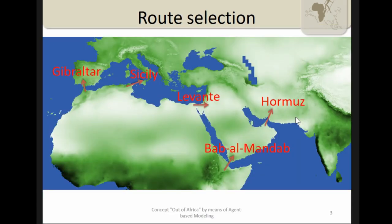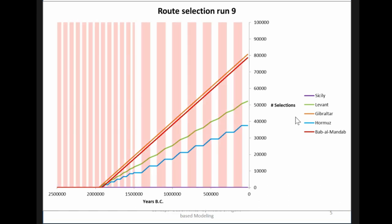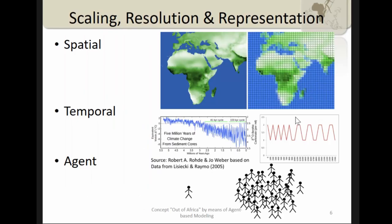As one example — to give you a sense of my background — we can look at route selection and how we compare hypotheses. We set agents that behave according to certain formalized hypotheses, then count how many agents or streams of populations select each route. We get numbers on which route the population selected and for how long, allowing us to compare different hypotheses. We can also make inferences about environmental factors such as glacial or interglacial periods.